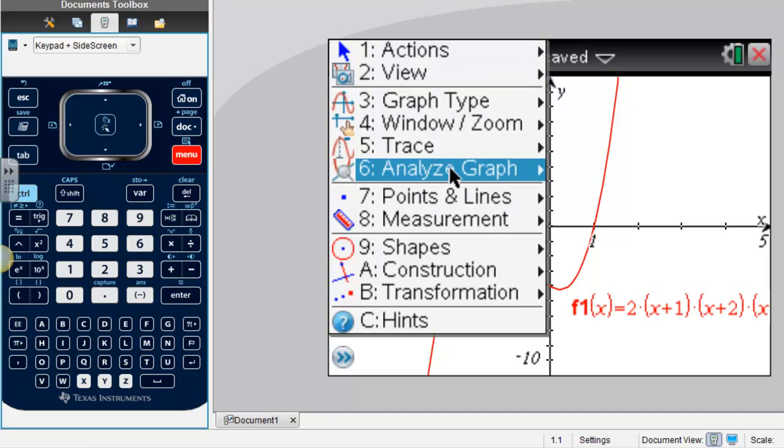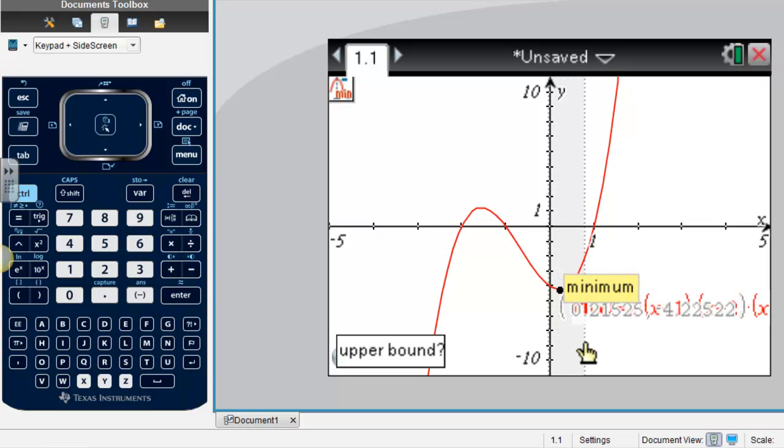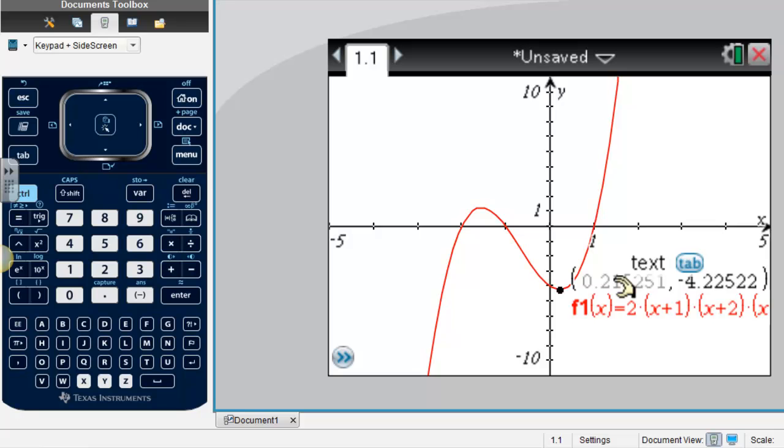The other important point was to find the maximums and minimums, and to find that, I'm going to go menu, analyze graph, minimum, and here's our minimum point, and you can see down here it's asking for the lower bound. So I'm just going to click to the left of that minimum, and then to the right of that minimum, and there's our point, 0.21, negative 4.23, if I rounded, and that's our minimum point.